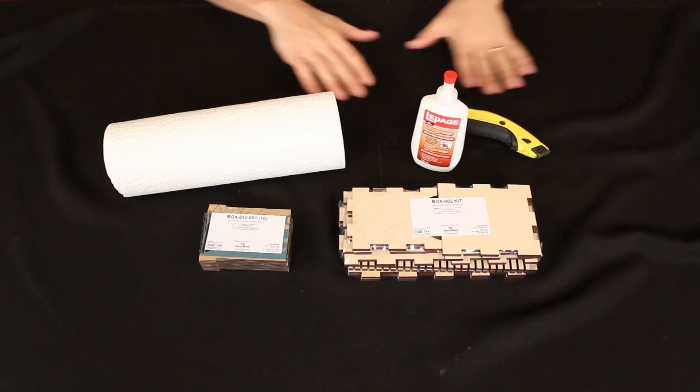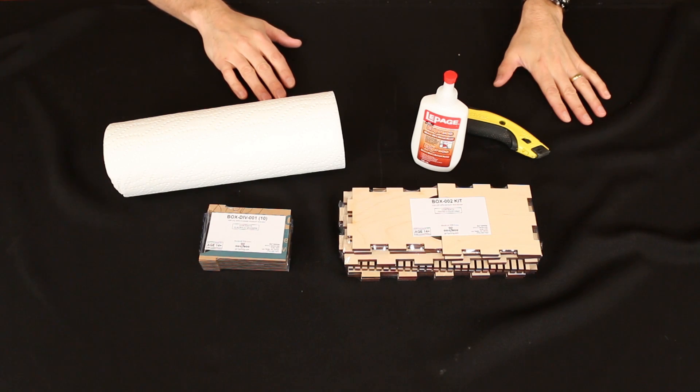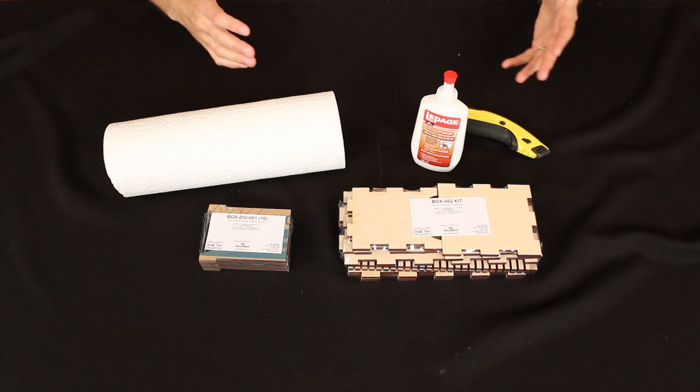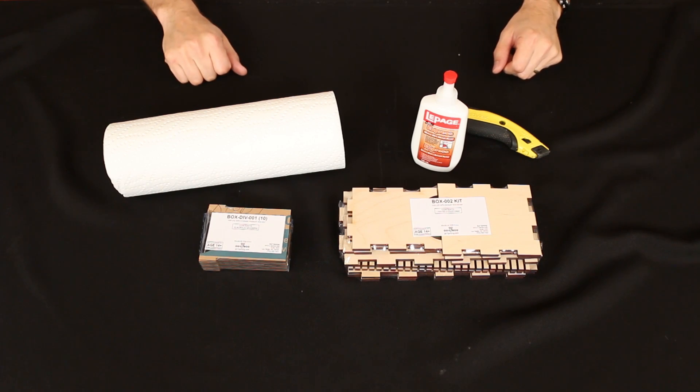To start, I've laid out some old fabric on my tabletop surface. We are going to be working with glue. We don't want to make a mess of things, or if we do, we at least want to be able to throw that mess out and not get blamed for it.